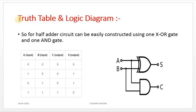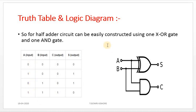This is the truth table and logic diagram of the half-adder. The half-adder has two inputs, and the possible number of input combinations is 2 to the power of 2, which equals 4. So the possible outputs will be 4 for the half-adder.